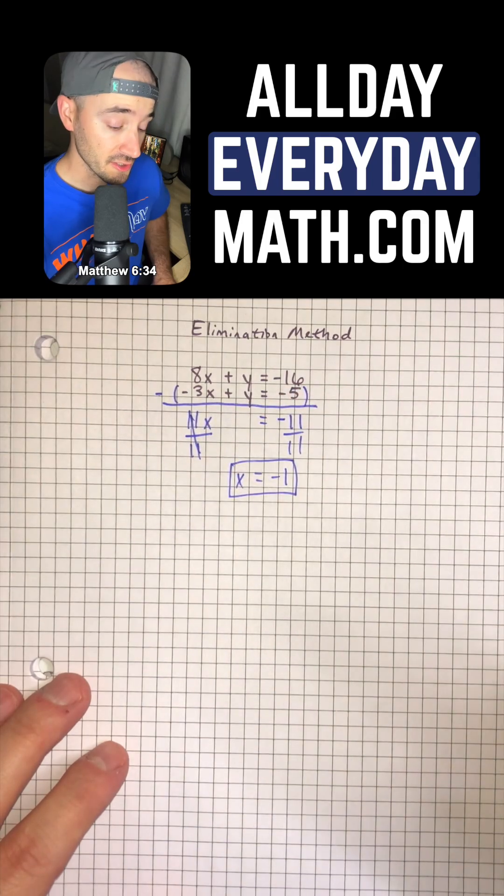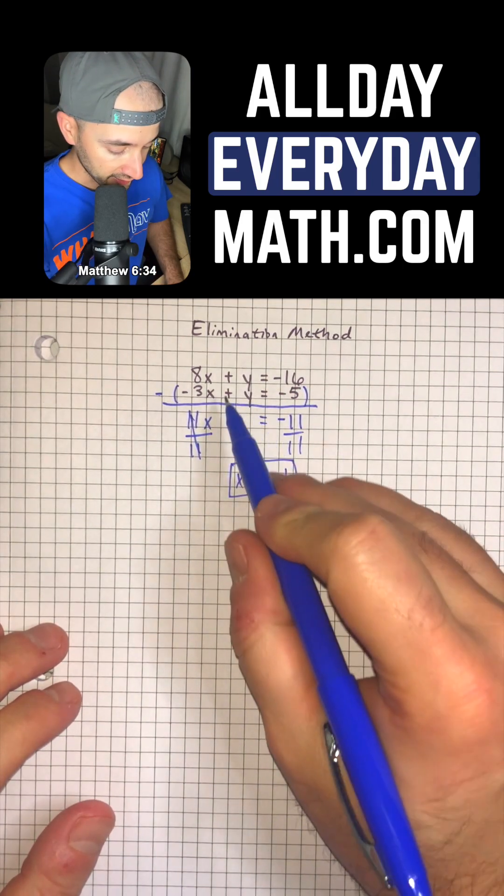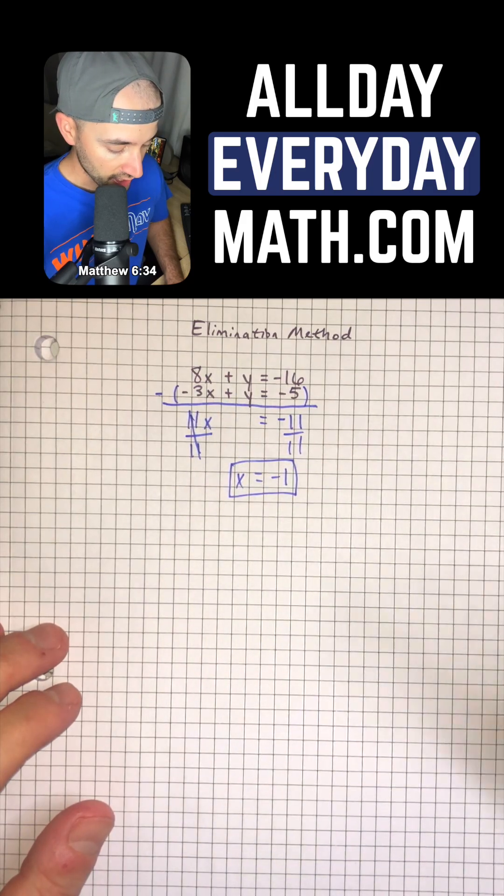So that's one part of our solution. Now we can just take negative 1 and plug that in for x into either equation. So I'm going to use the first one.